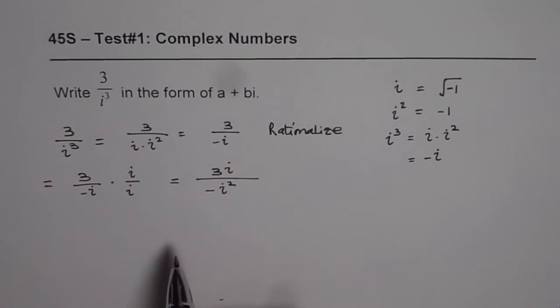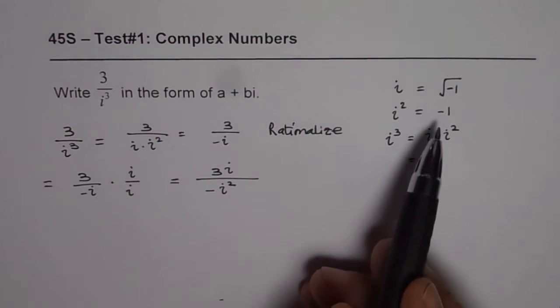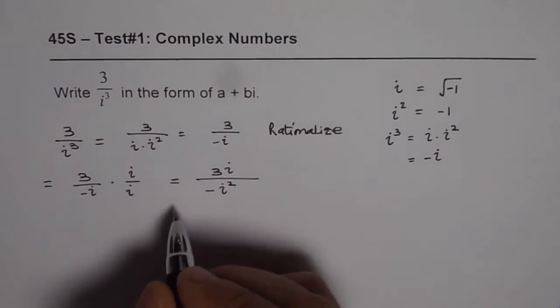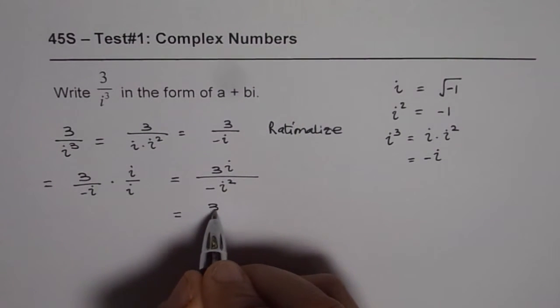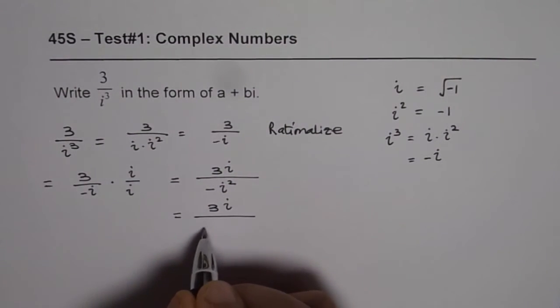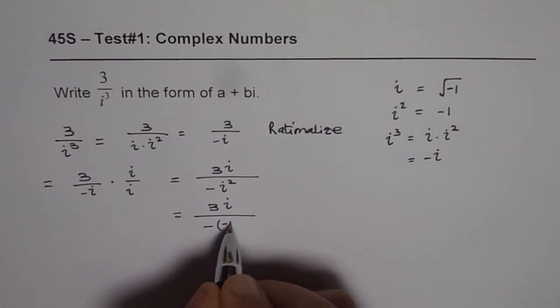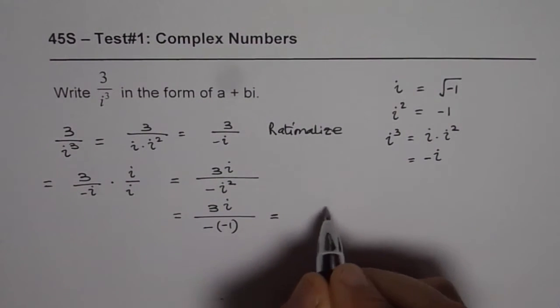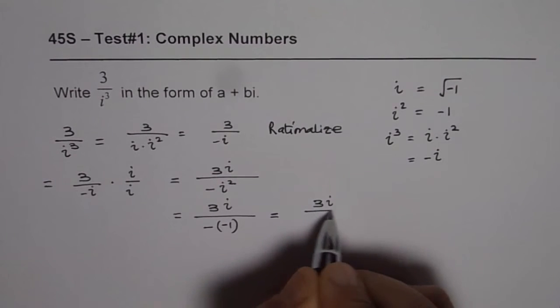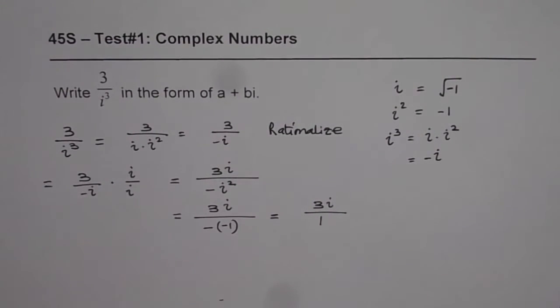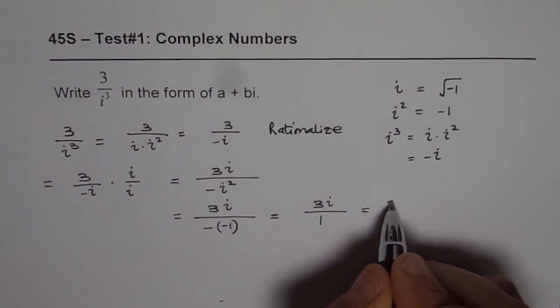Now minus i square means what? i square is minus 1. Let's replace it. So we have 3i divided by minus of i square is minus 1. Now this could be written as 3i over minus minus is plus 1. So that is 3i.